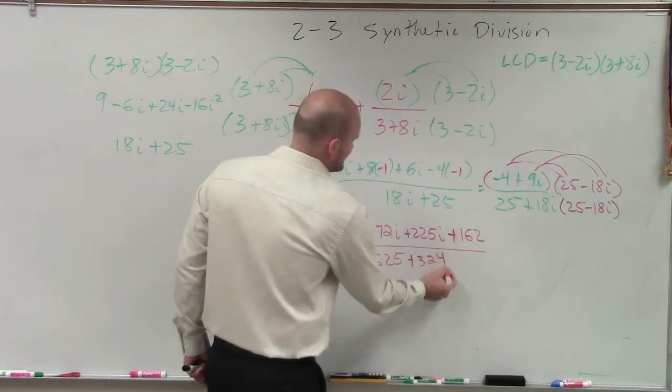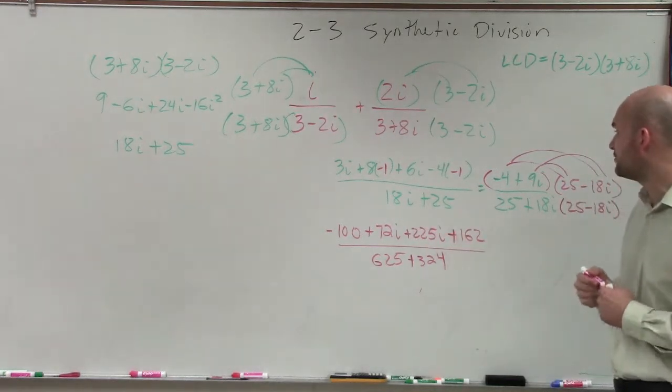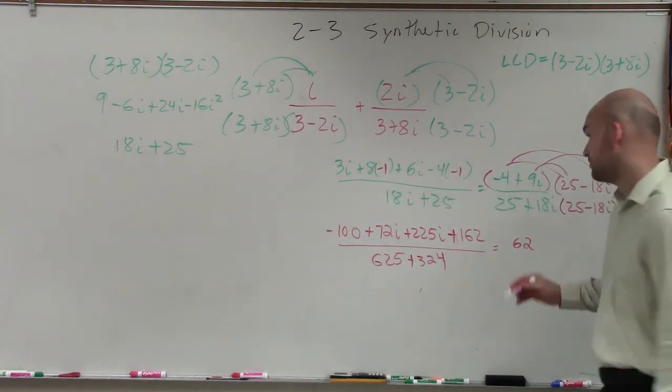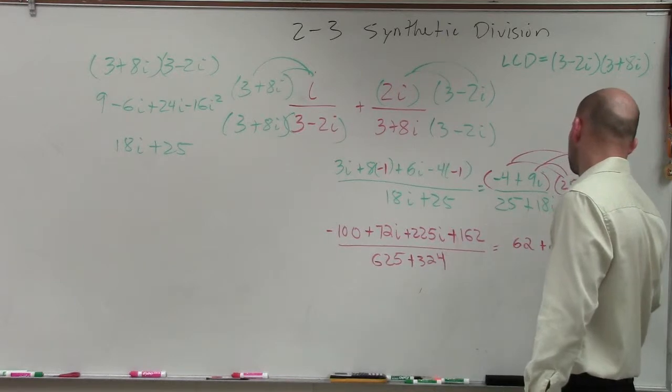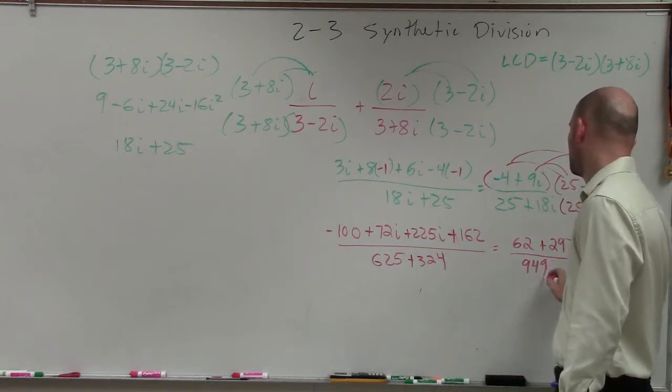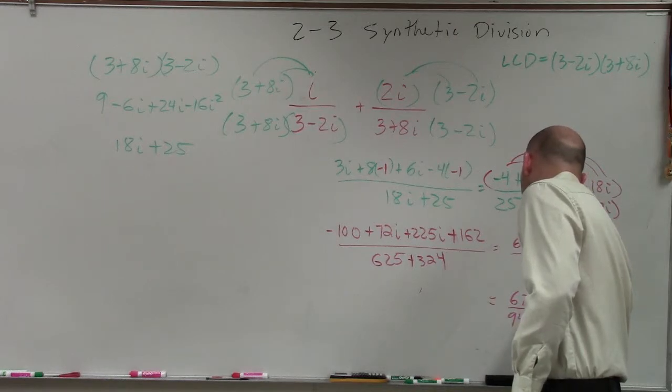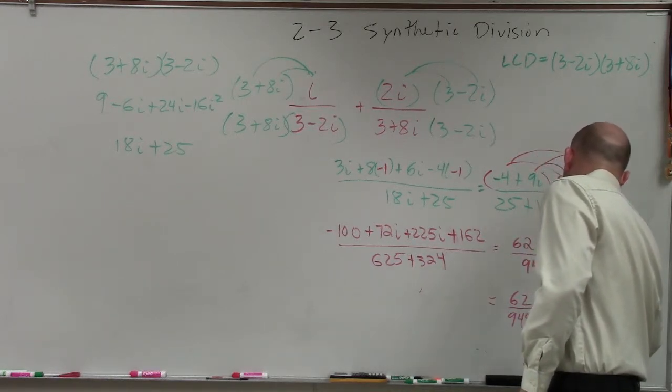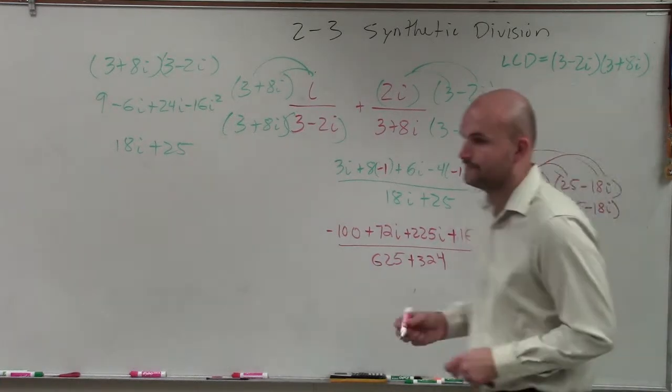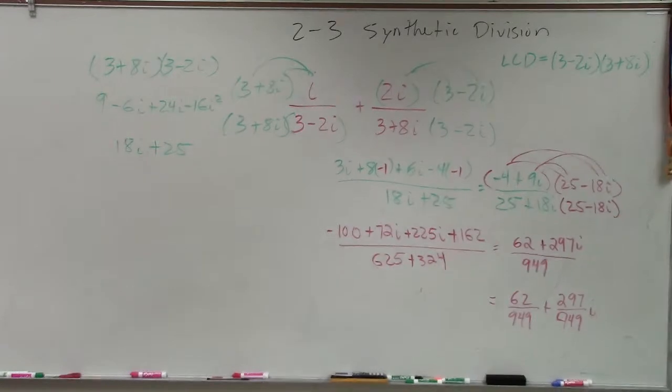All right, is this looking fun? So now let's go ahead and add these up. You have negative 100 plus 162, that's just going to be 62. 72i plus 225i is 297i, all over 949. Then rewrite this in complex form: 62 over 949 plus 297 over 949i.